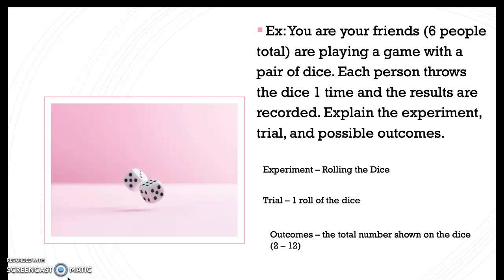And the outcomes is the number that's shown on the dice. Because there are two dice, the smallest number that we could have is a two - one on each. And the largest number is a 12 - six on each. So that's the idea of experiment, trial, and outcome.